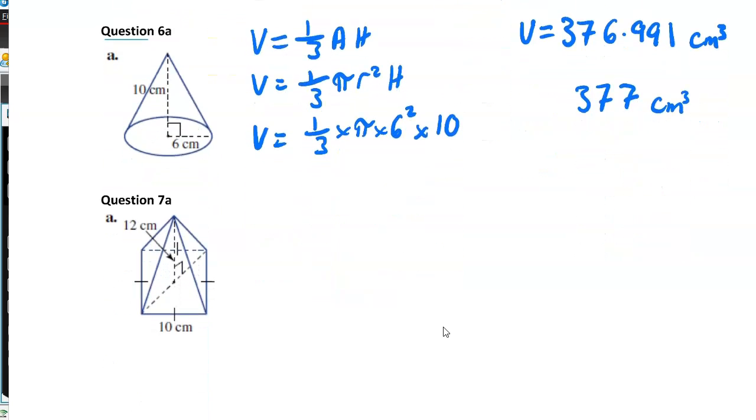Here I have a pyramid with a square base. So volume equals one-third area times height. So volume equals one-third times 10 squared times 12.